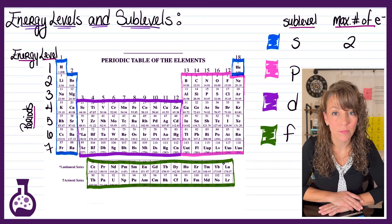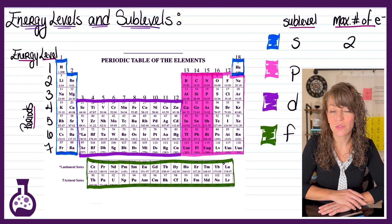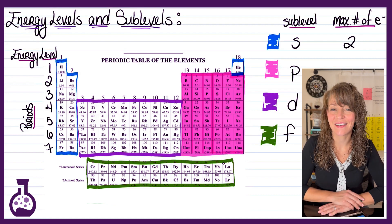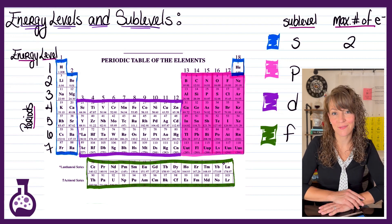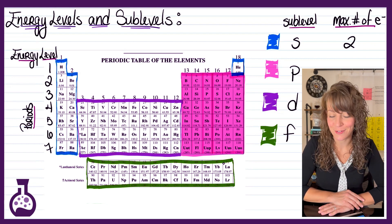If we apply this to the p sublevel, if you take a look at that p block, there's six elements going across each one of those energy levels. And the p sublevel happens to hold just six electrons.